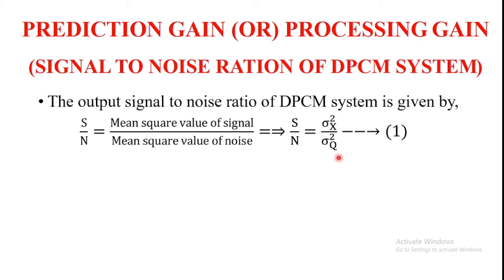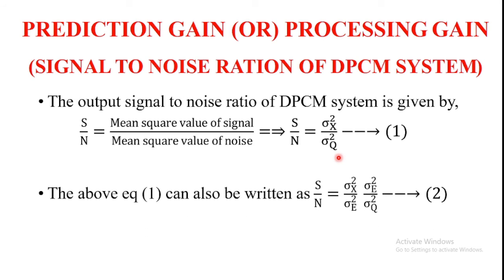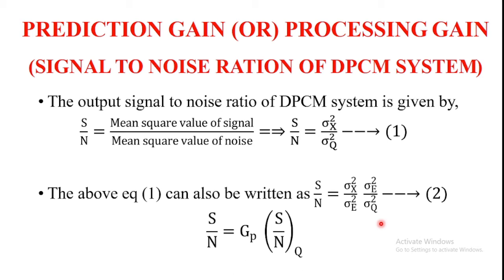Sigma x square is the variance of the input signal X(nTs) and sigma q square is the variance of the quantization error Q(nTs). This equation may also be written by multiplying the numerator and denominator on the RHS by sigma e square. After multiplying, the RHS term can be written as sigma x square divided by sigma e square, into sigma e square divided by sigma q square, where sigma e square is the variance of the prediction error E(nTs).